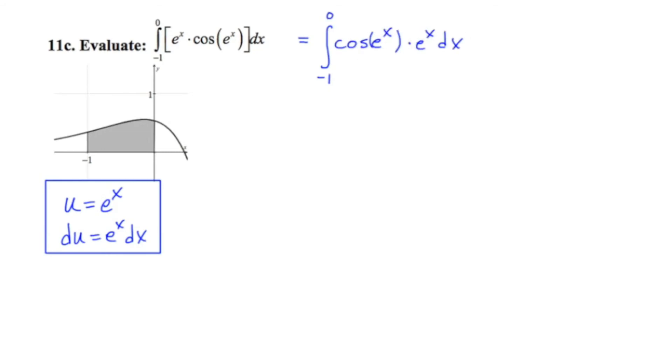And at this point, I'm going to rewrite the originally stated problem exclusively in terms of u. So we end up getting the cosine of u, and then of course e to the x dx is the same as this e to the x dx, which is simply du.